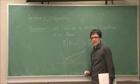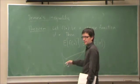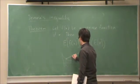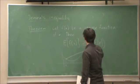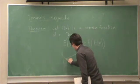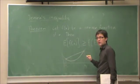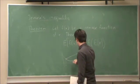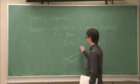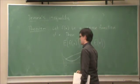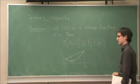The expected value of f of x, depending on the probability weights between these two points, would lie somewhere on this line. Whereas f of the expected value of x must obviously lie on the function. So therefore, if this is the expected value of f of x, this would be f of the expected value of x, which is smaller.